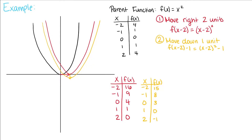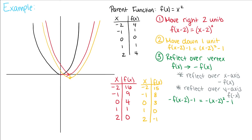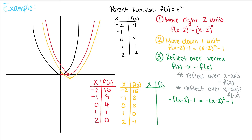Now let's reflect this. Since we've moved it already, we're reflecting over our vertex, but typically we reflect over the x-axis or the y-axis. In this case it's a reflection over the x-axis, so we multiply our function by negative 1. This becomes f(x) = -(x - 2)² - 1. We rewrite our table of values and draw that reflection.